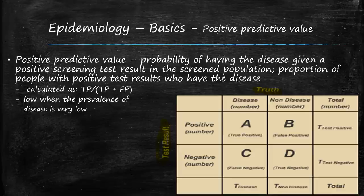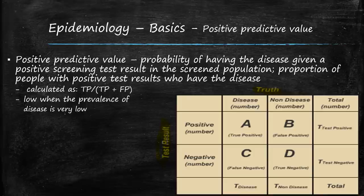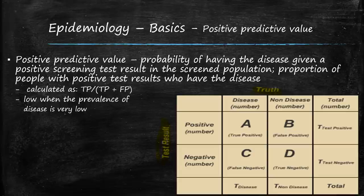At the top of the two-by-two table we have 'truth': those that have the disease and those that do not. On the left side we have the test result: positive and negative. Box A contains true positives — the patient has the disease and the test picked it up as positive. Box B contains false positives — no disease but the test said there was. Box C contains false negatives — the patient has the disease but the test was negative. Box D contains true negatives — no disease and the test correctly resulted in negative. Column totals appear at the bottom and row totals go across.